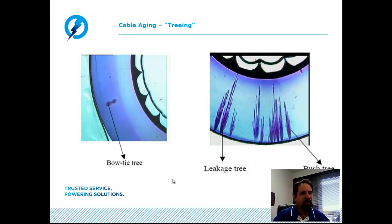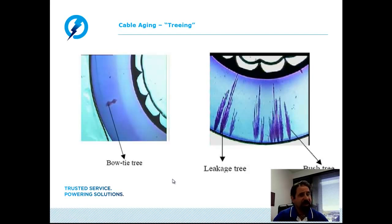Bowtie trees are water trees that grow from within the insulation outward toward the surfaces, growing in the direction of the electric field in both directions toward the two electrodes — the center conductor and the concentric neutral surrounding the cable. Bowtie trees have a faster initial growth rate compared to the vented tree; however, they are not capable of growing to large sizes and usually do not grow to a size significant enough to cause a failure in the insulating system.